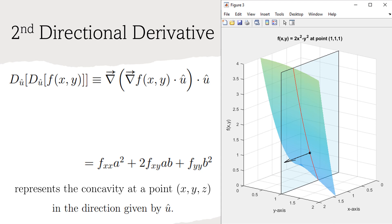I left the steps to get to the second directional derivative expression as a problem to be worked through. If you work through the steps, recall that the mixed partial derivatives f sub xy and f sub yx are equal if the function f is twice continuously differentiable. This finding is often referred to as Clairot's theorem.